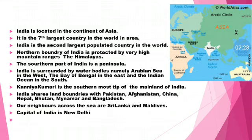In the south, the Indian states like Karnataka, Tamil Nadu, Kerala, Goa, and other south Indian states form a peninsula. A peninsula is land surrounded by water on three sides. Looking at the India map on the southern side, we have three water bodies: the Arabian Sea to the west, the Bay of Bengal to the east, and the Indian Ocean to the south.